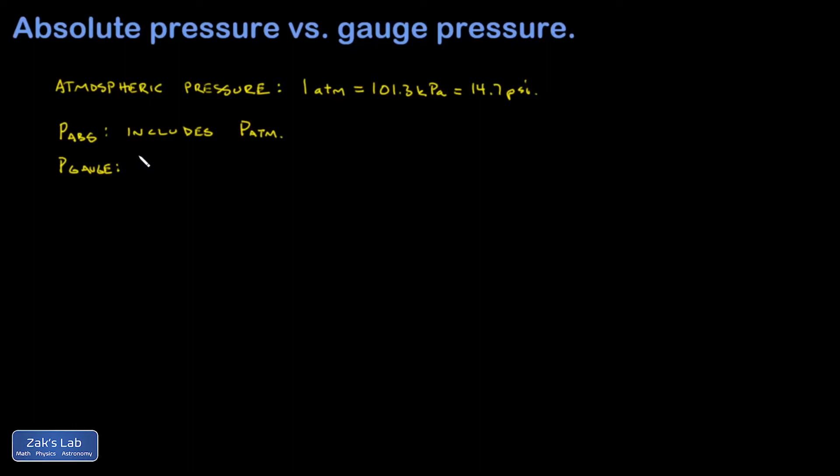So what's gauge pressure? That's the pressure relative to the atmospheric pressure. So like if I look at the pressure in a tire and it's 30 psi, it means 30 psi higher than the atmospheric pressure around it.